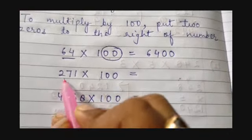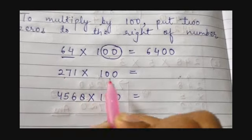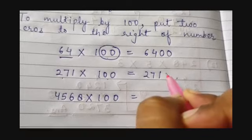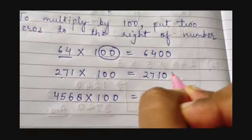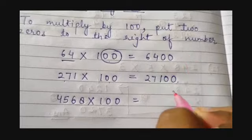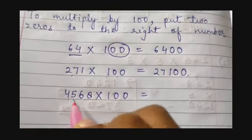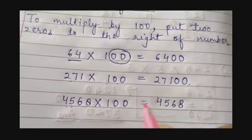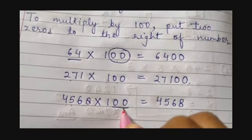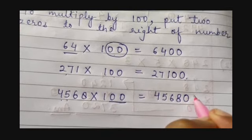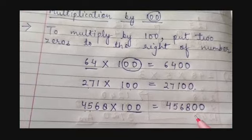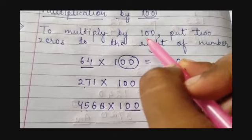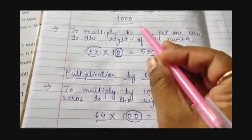Then move on to the next number — we are multiplying 271 by 100. You write the number 271 and add 2 zeros. This is your product. Now come to the third number, that is 4568. You write 4568, and because in 100 you have 2 zeros, you add 2 zeros. You have to keep this in mind whenever you do this multiplication with 100, 10, or 1000.